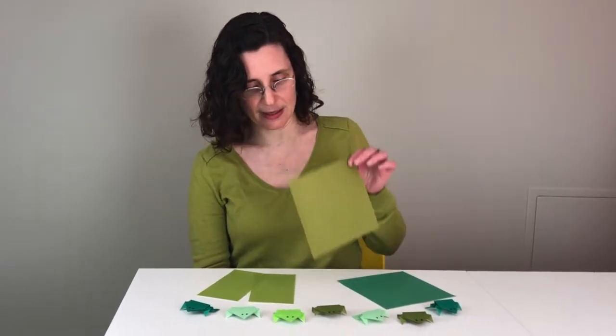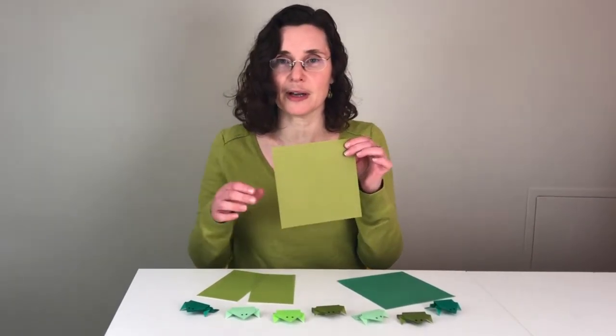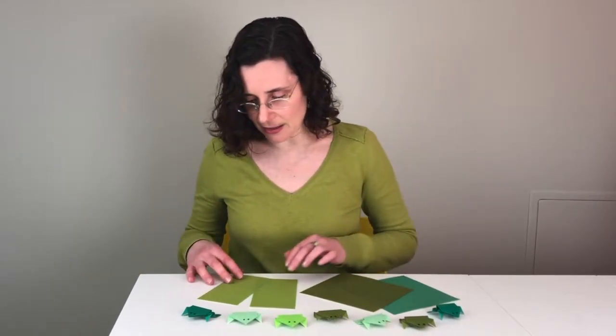You're going to need origami paper, a square piece. If you don't have origami paper, any paper will work. Just cut it into a square, and then we're only going to need half of that square to make our frog.